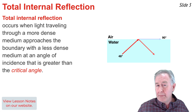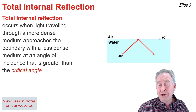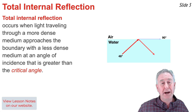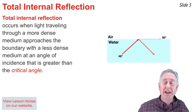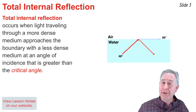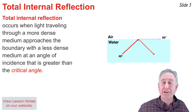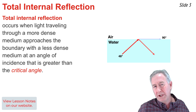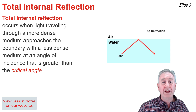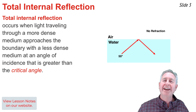If you think about this situation — which occurs for the water-to-air boundary at about 48 degrees angle of incidence — there's no possible way to get an angle of refraction greater than 90 degrees. So if you increase the angle of incidence greater than 48 degrees, what happens to the refracted ray?